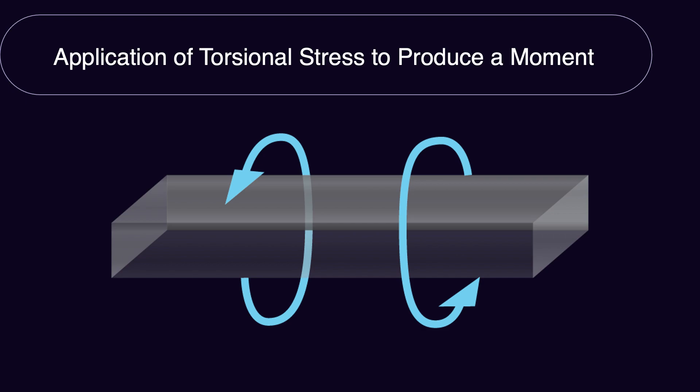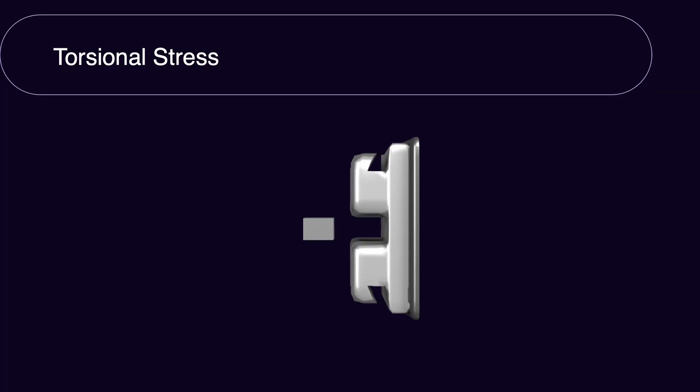Sometimes we apply a torsional stress to a material to produce just a moment. An example is the application of torque to a rectangular wire. We twist the rectangular wire; torsional stress appears in the cross section of the wire, producing two forces in opposite directions. This is typically used to move the roots or crown of the tooth in the third-order dimension.